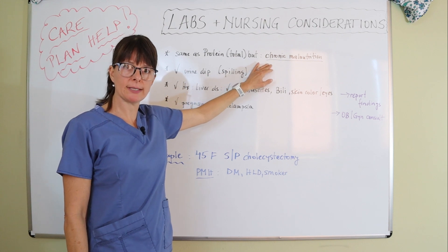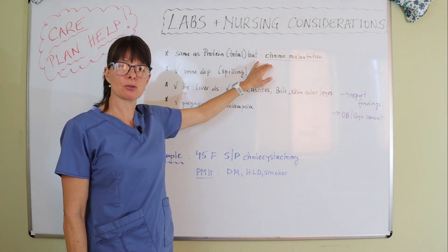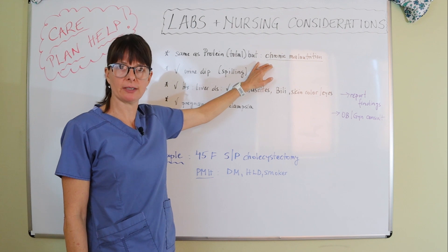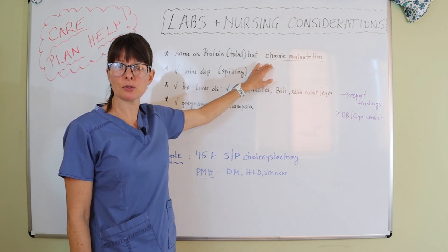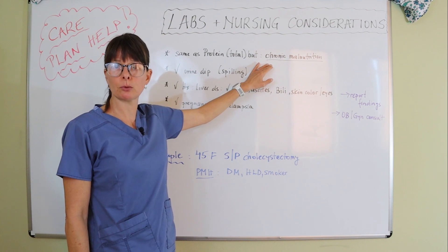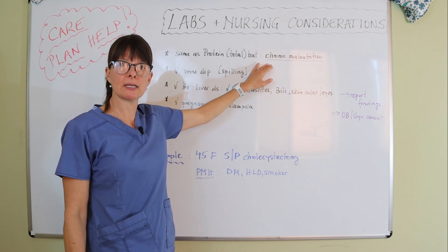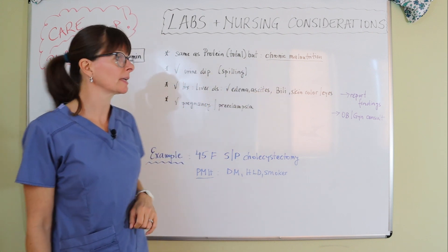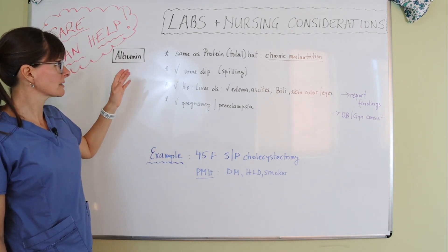One quick tidbit: albumin, if it is low, is usually more indicative of chronic malnutrition. Think about your patients who have had a prolonged hospital stay or have some sort of chronic malabsorption issues. It's very important to check albumin levels regularly because it helps with wound healing, overall well-being, and helps all the processes of the body work more smoothly.